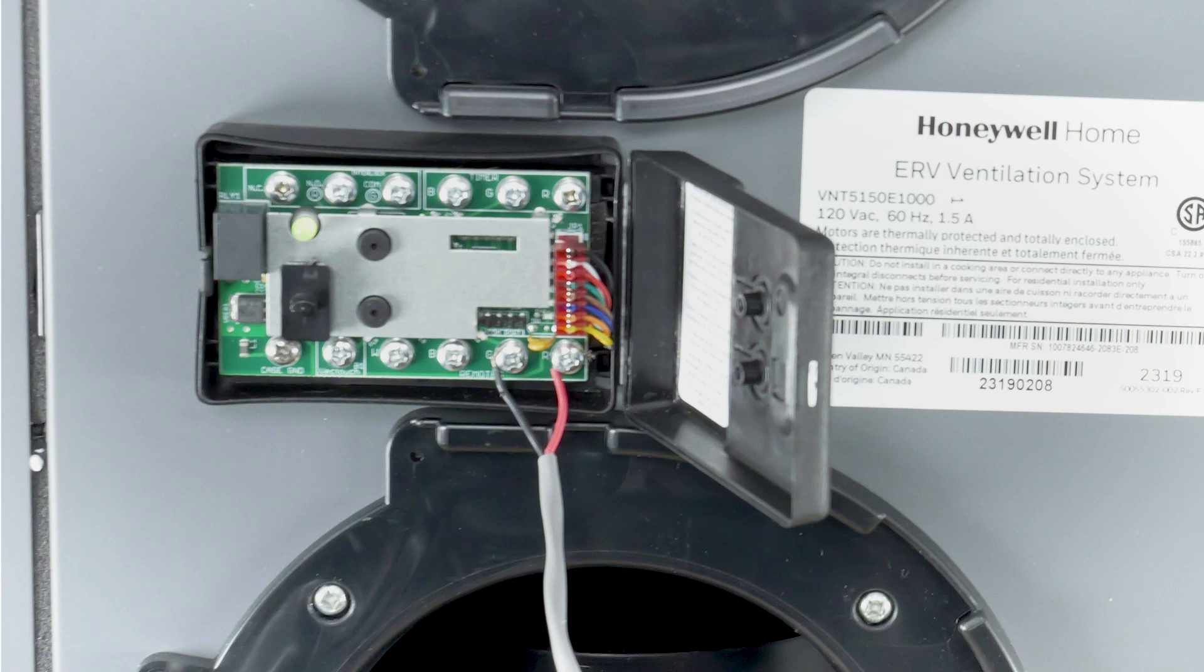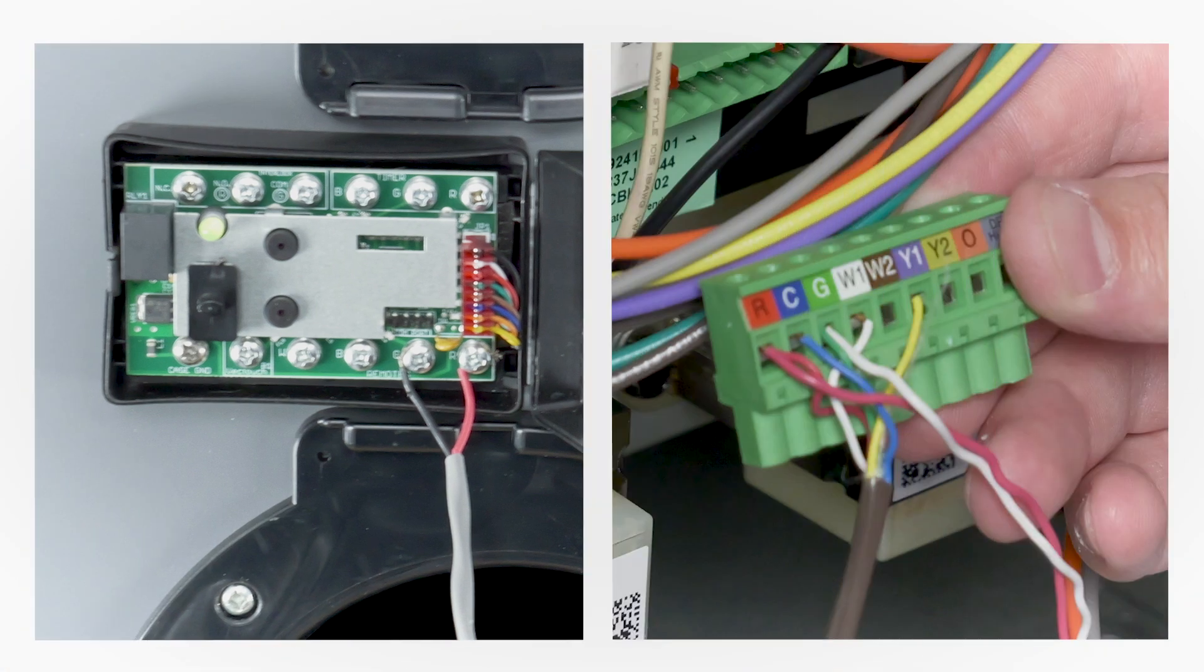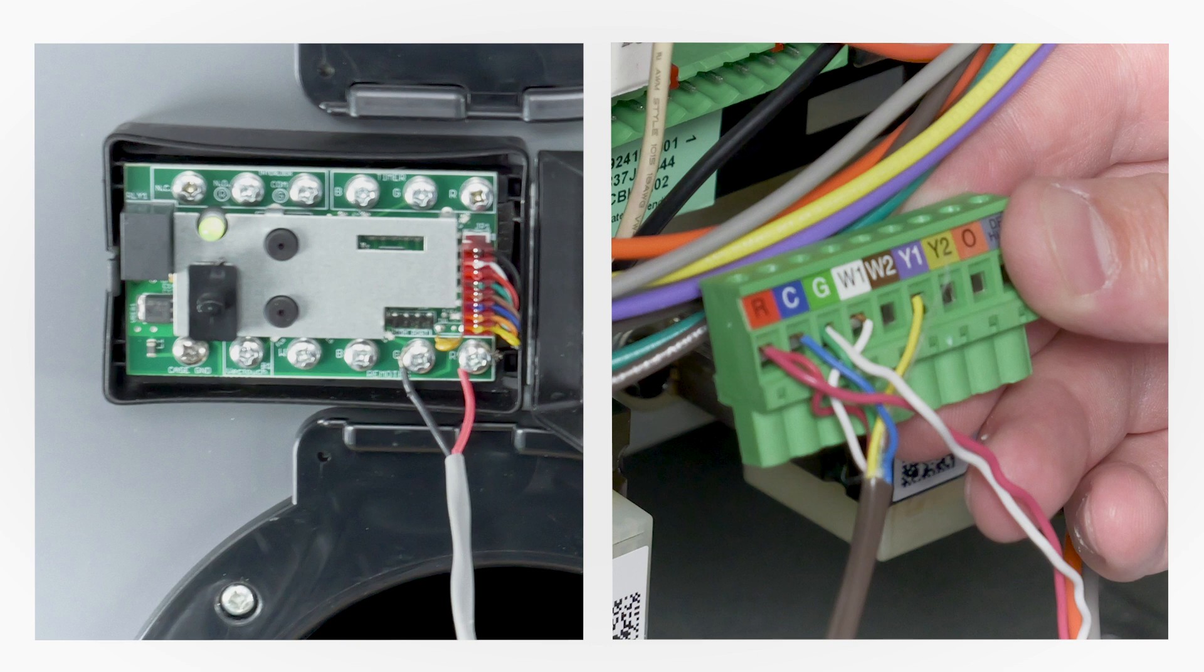Begin by wiring the interlock, NO, and COM terminals on the ventilator board directly to the R and G terminals at the furnace or air handler. These wires will be in parallel with R and G from the equipment side of the zone panel.